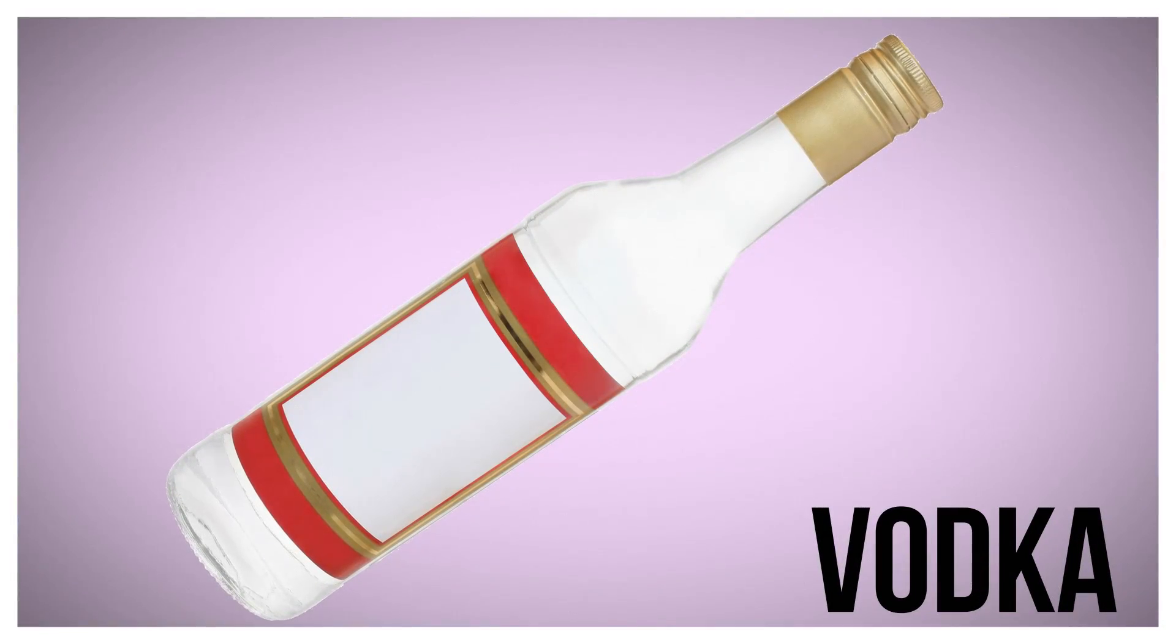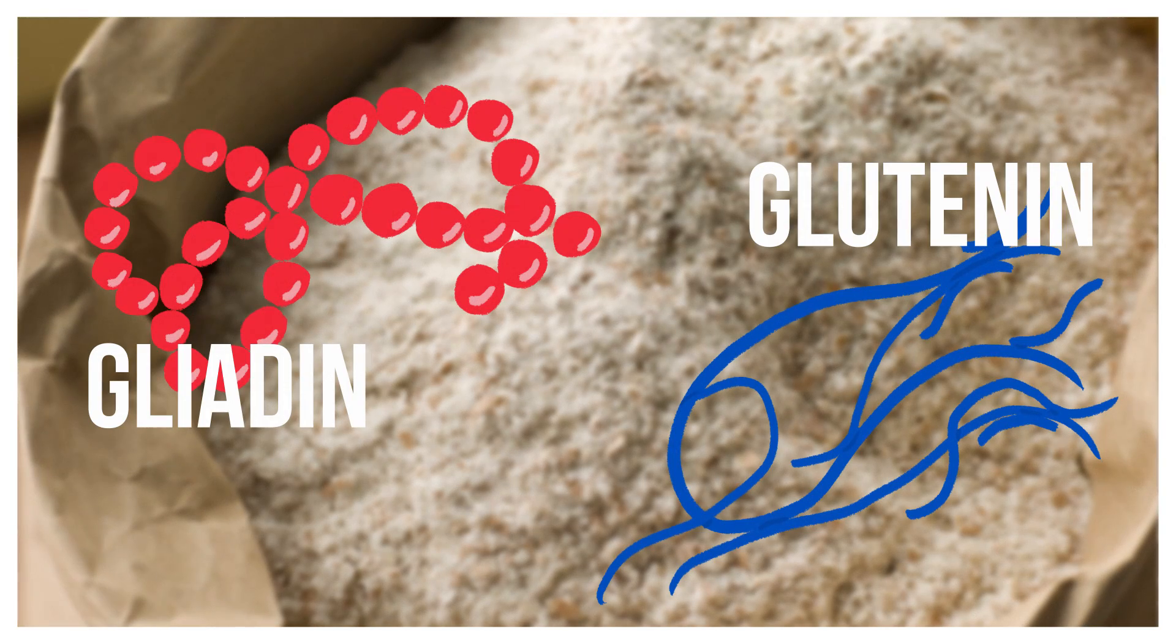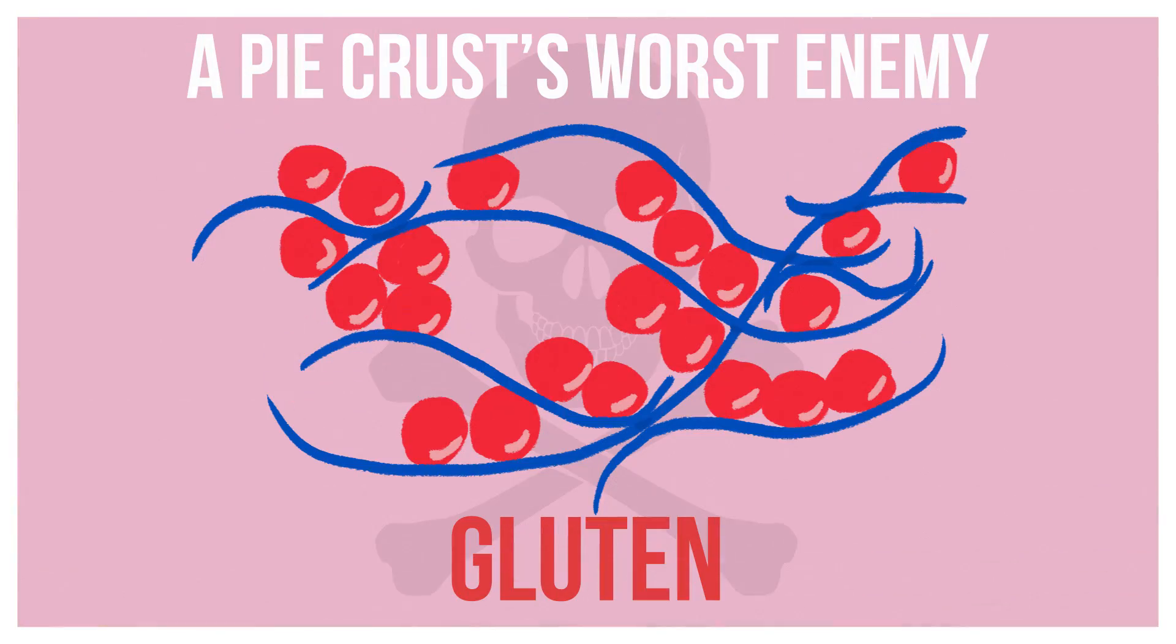Normally, two of the main ingredients in pie crust are wheat flour and water. But wheat flour contains two proteins, gliadin and glutenin, that can combine to form a delicate pie crust's worst enemy, gluten. The proteins combine when they're exposed to water, and the more you work the dough, the more gluten will develop.